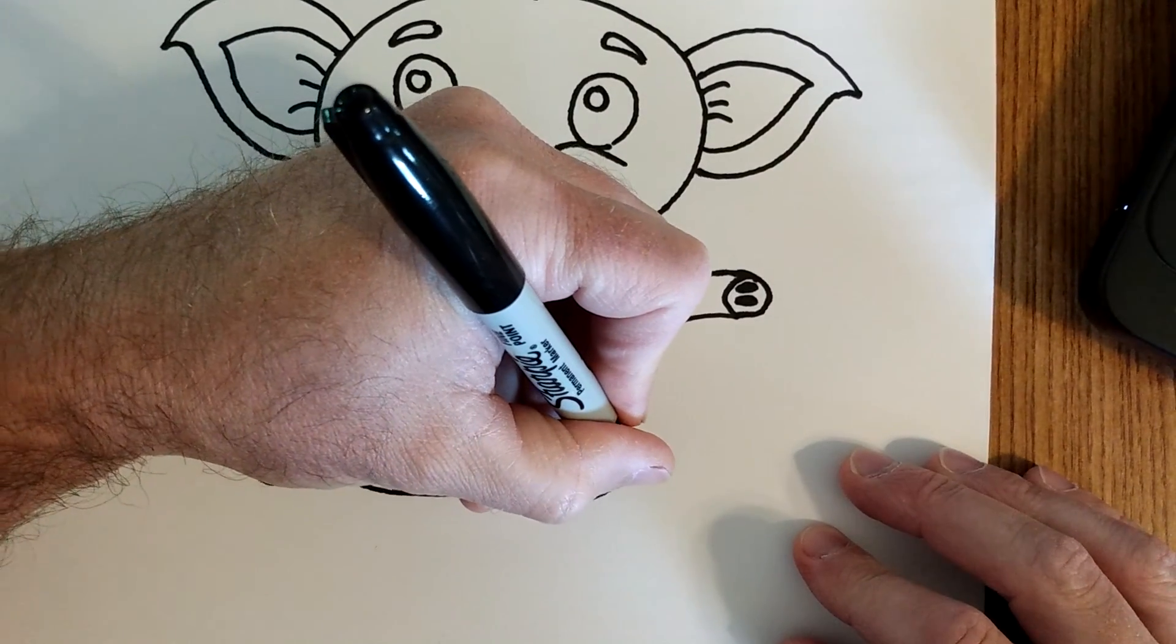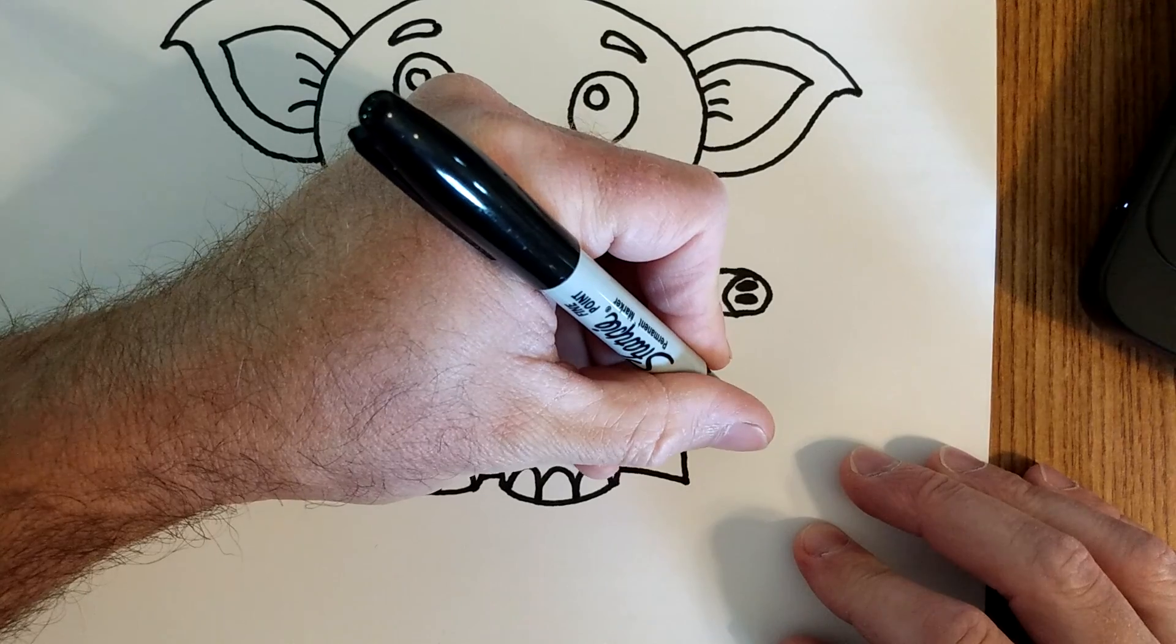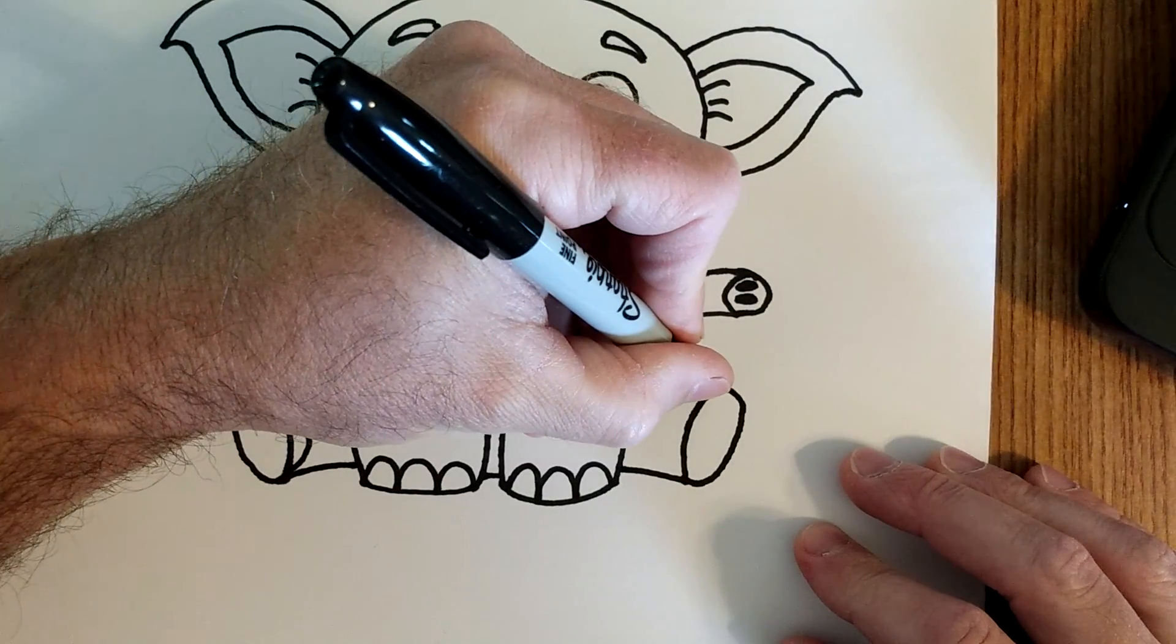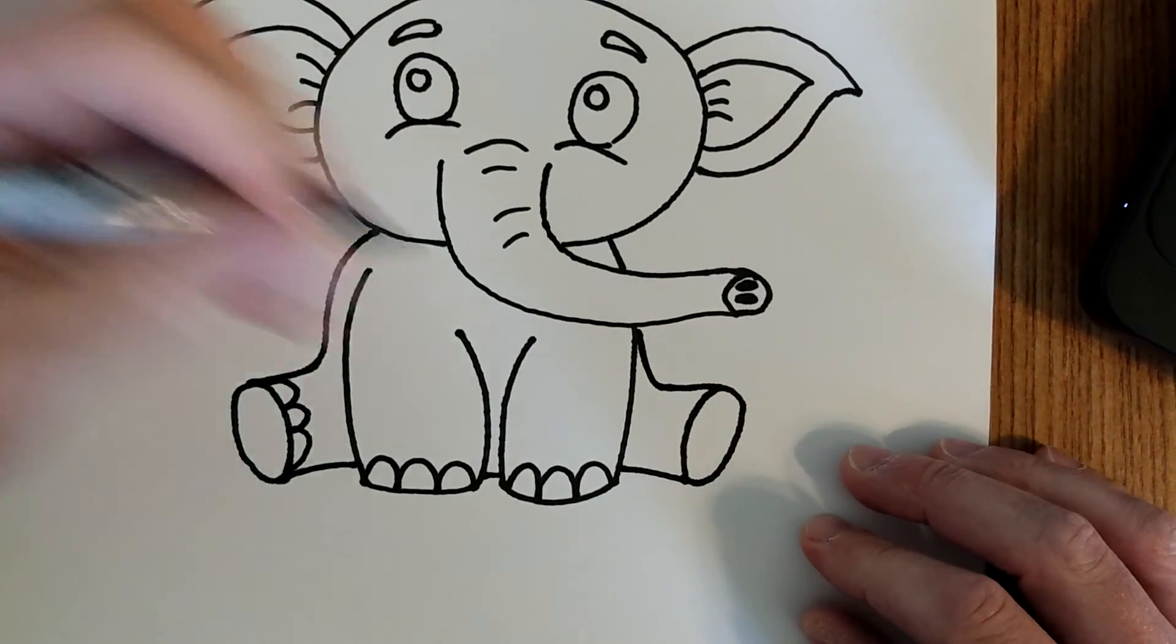On this side, same thing. Draw an oval. This one's going to curve down and up, but it's just going to connect into the trunk there.